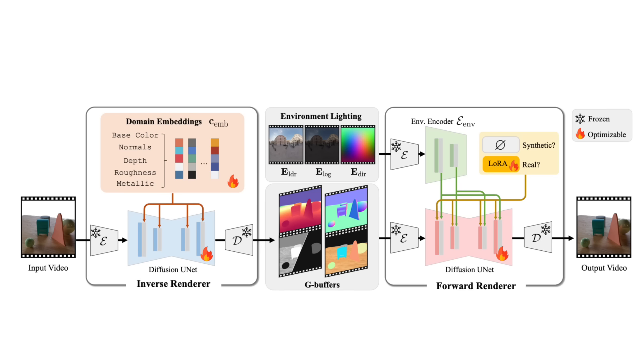The forward renderer, built on stable video diffusion, is conditioned on G-buffer attributes — normals, depth, base color, roughness, and metallic — and panoramic environment maps.